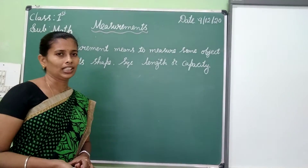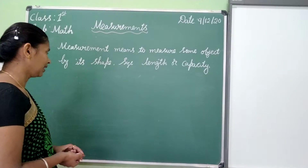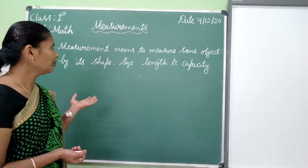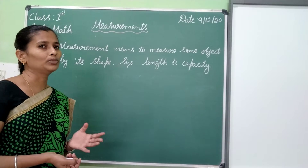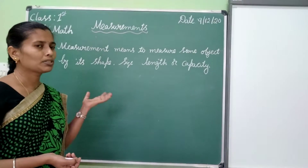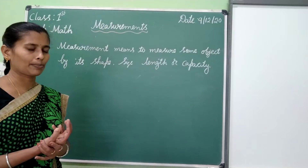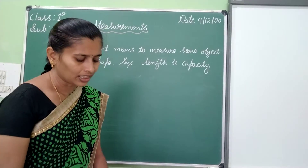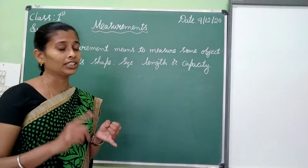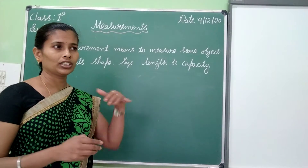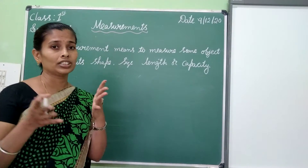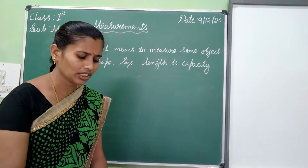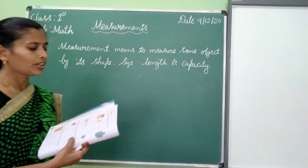Children, last class we learned measurement. What is measurement? Measurement means to measure some objects by its shape, size, length or capacity. Okay children, in this lesson we can learn which is heavier, which is a lighter object, which one is tall or short, which one is long or short. This much you can learn in this lesson children.